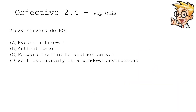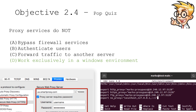We are at the end of Objective 2.4. Here is a pop quiz: Proxy servers do NOT — be careful, it's a 'not' question — do not bypass a firewall, do not authenticate, do not forward traffic to another server, or do not work exclusively in a Windows environment. The answer is D: proxy servers do not work exclusively in Windows. You can use them on pretty much any kind of device, including Mac OS X and Linux systems such as Ubuntu for configuring different proxy servers.